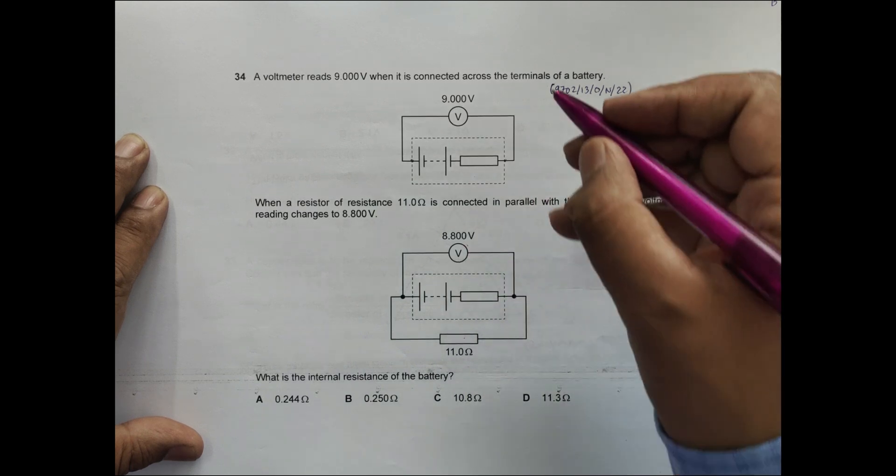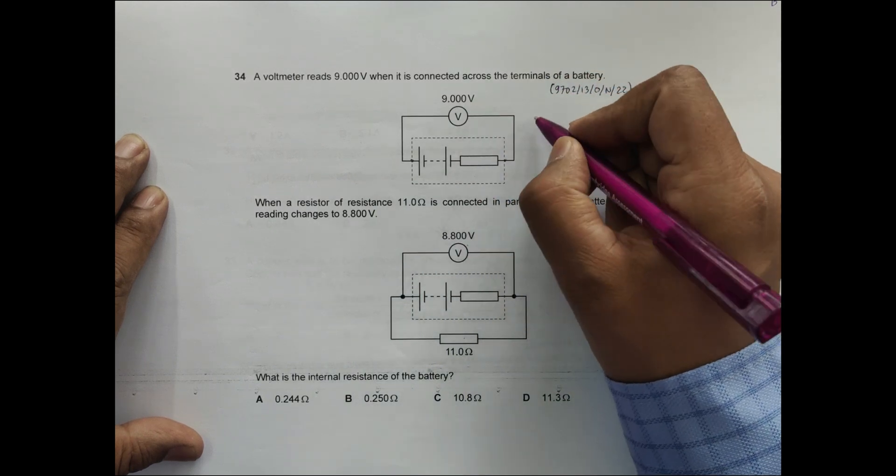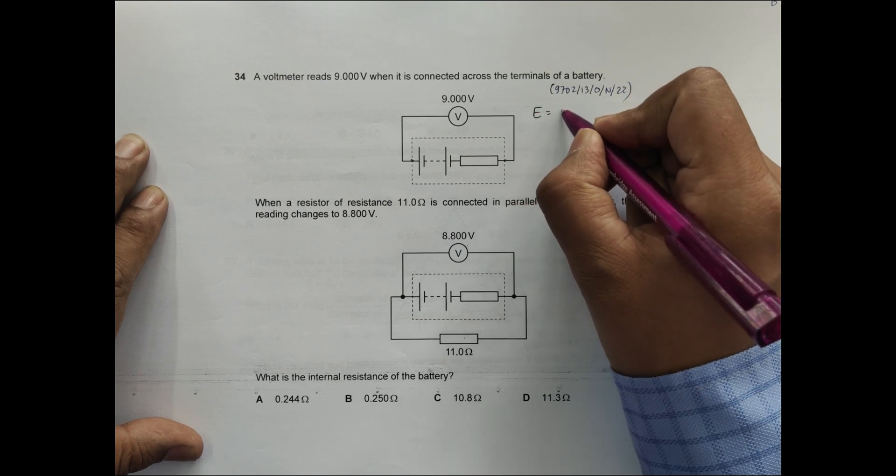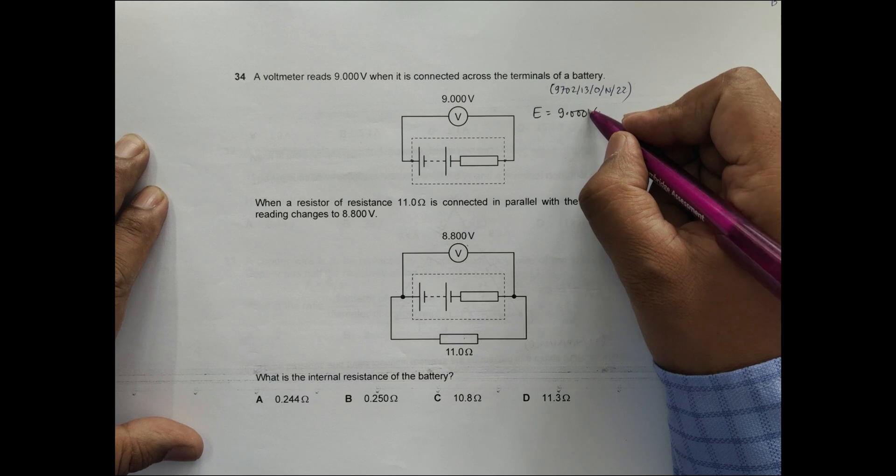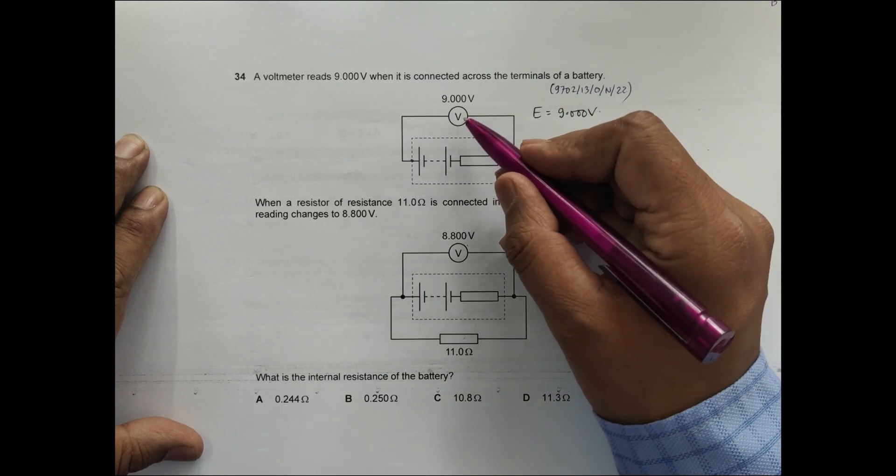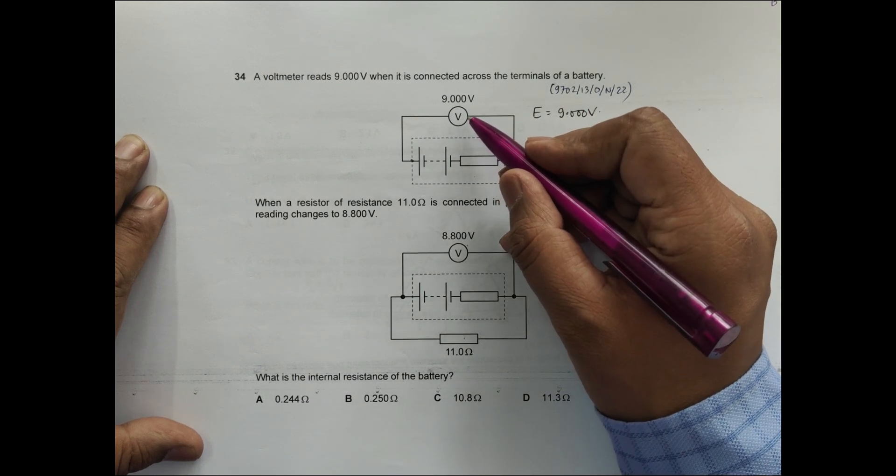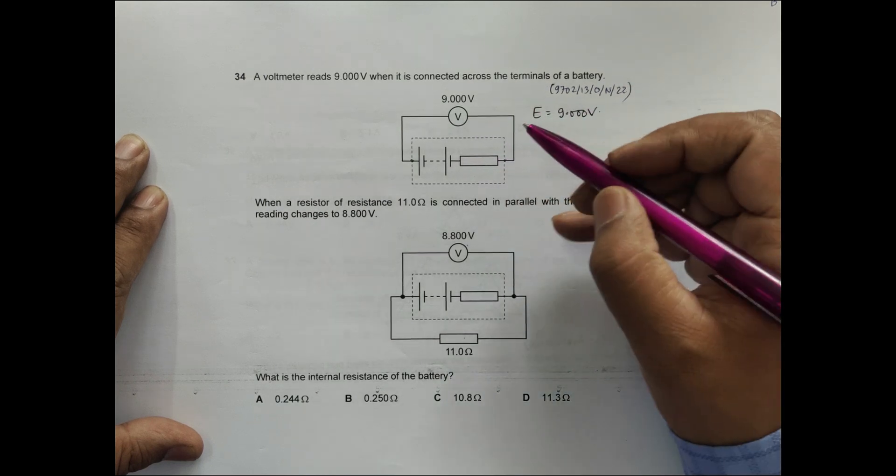In this condition, the voltmeter is measuring its EMF, which is 9.000 volt. We assume voltmeters are ideal if nothing is said - that means they have infinite resistance.